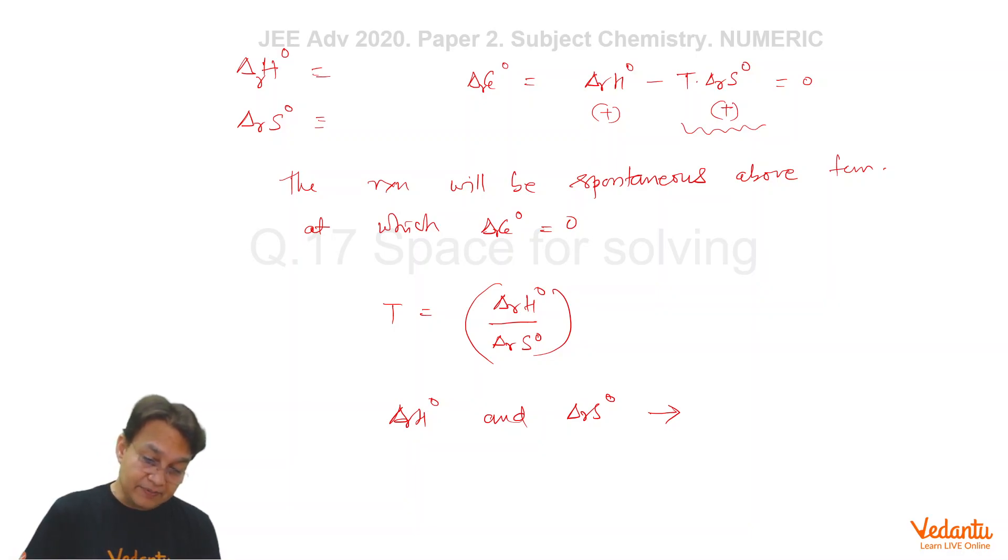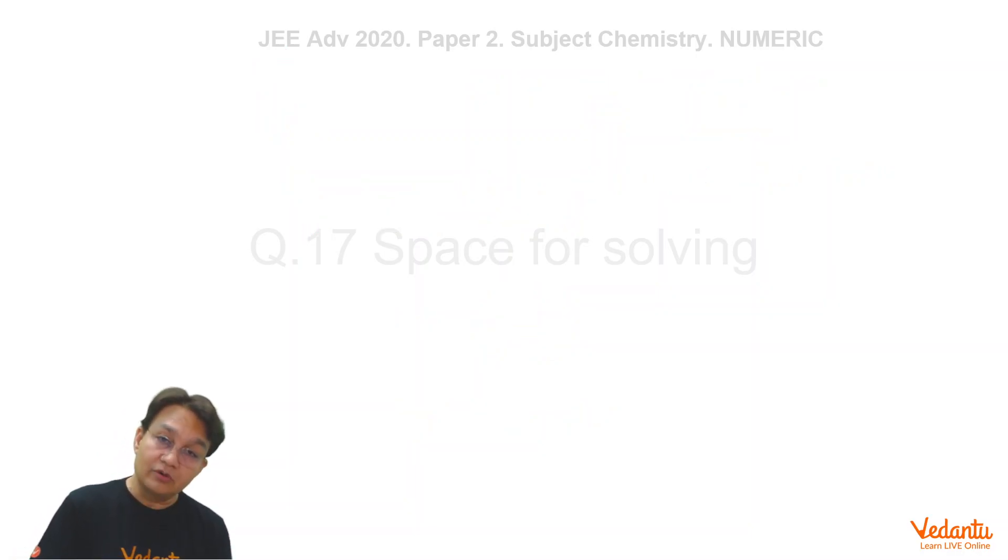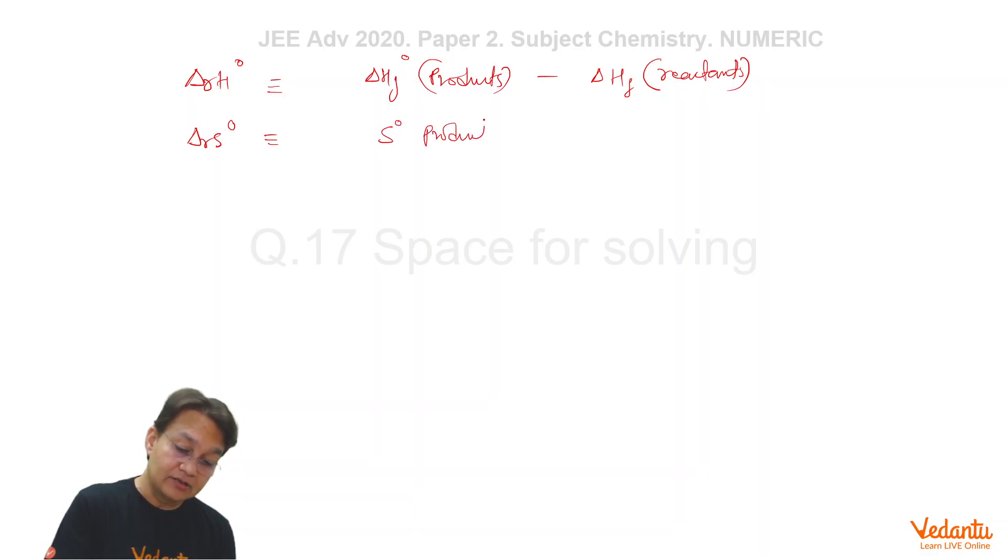Keeping in mind all these things, you also have to take into account from the given data: delta RH0, the reaction's enthalpy change, equals enthalpy of formation of products minus enthalpy of formation of reactants. That's a standard formula. Delta RS0 equals standard entropies of products minus standard entropies of reactants. Doing this, you will be calculating delta RH0 and delta RS0.